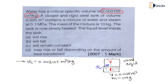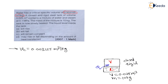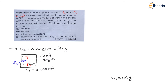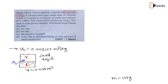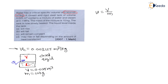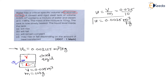In this question, the critical specific volume is given. We need to find the specific volume of the content. Specific volume equals volume divided by mass. Total volume of the tank is 0.025 m³ and mass is 10 kg. Therefore, specific volume of the content = 0.025 ÷ 10 = 0.0025 m³ per kg.